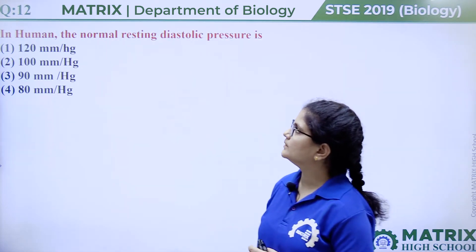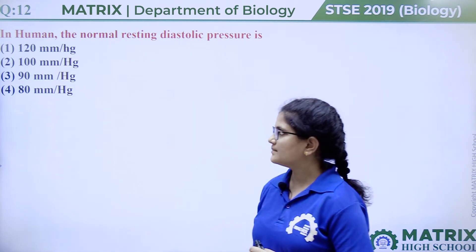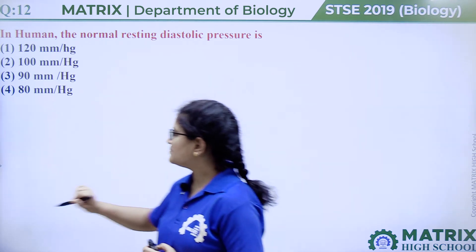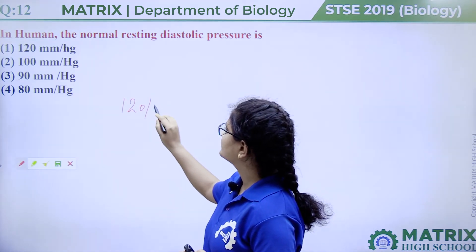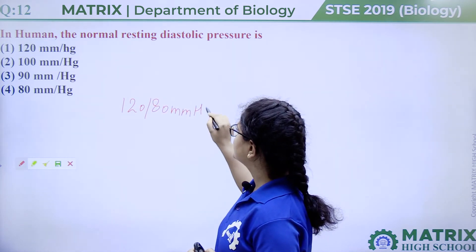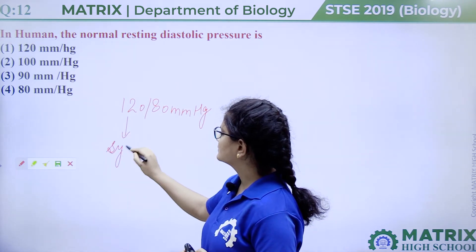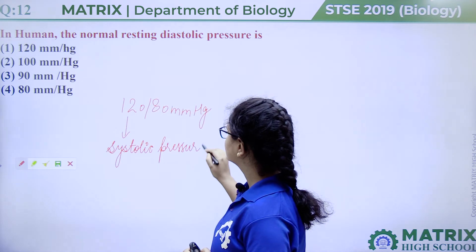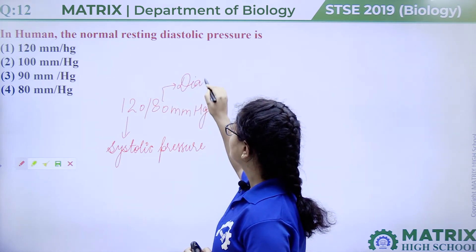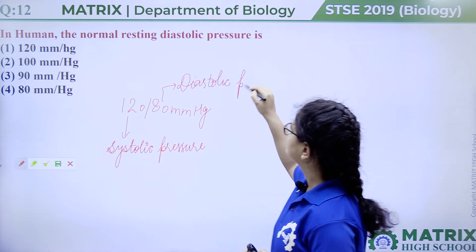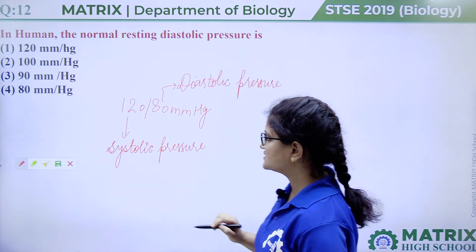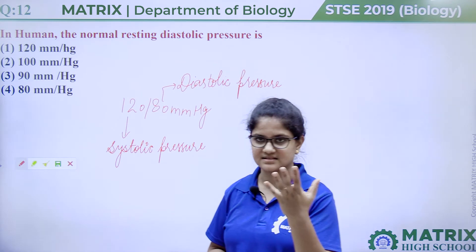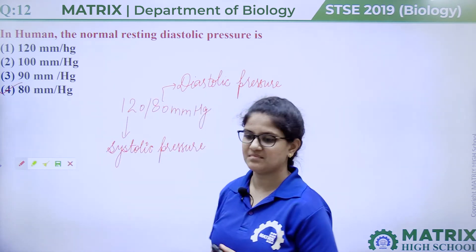Question number twelve: in humans, the normal resting diastolic pressure is 120 mmHg, 100 mmHg, 90 mmHg, or 80 mmHg. The normal blood pressure of a human body is 120/80 mmHg. The value 120 is systolic pressure — the pressure when the heart contracts. The value 80 is diastolic pressure — the pressure when the heart relaxes. So the answer is option four, 80 mmHg.